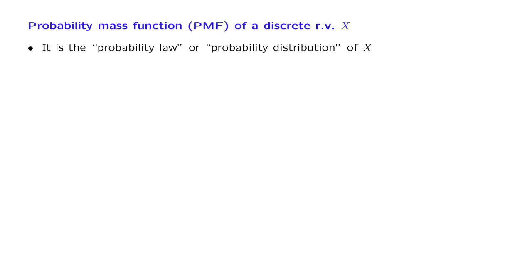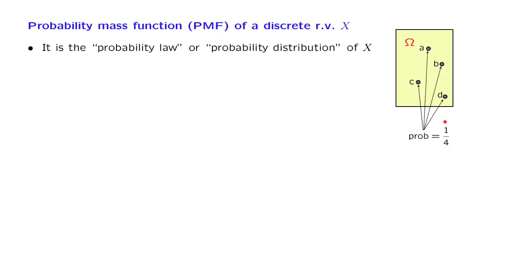Let me illustrate the idea in terms of a simple example. We have a probabilistic experiment with four possible outcomes, and a probability law on the sample space. To keep things simple, we assume that all four outcomes in our sample space are equally likely. We then introduce a random variable that associates a number with each possible outcome, as shown in this diagram. The random variable, capital X, can take one of three possible values, namely 3, 4, or 5.